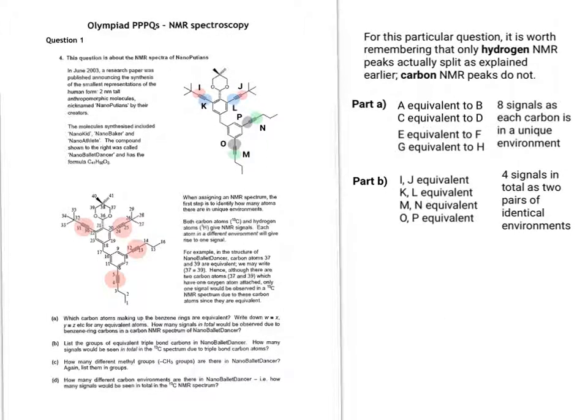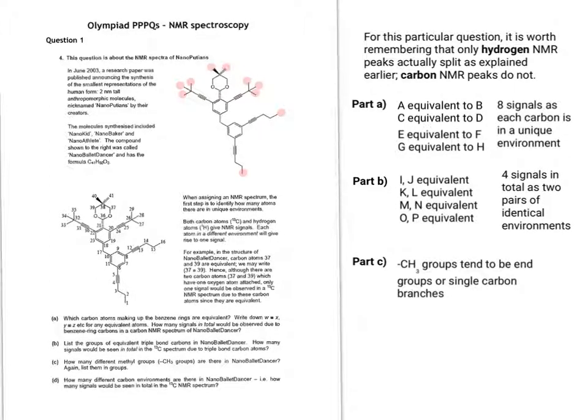For this part, they want us to work out how many CH3 groups there are. CH3 groups tend to be end groups or single carbon branches. I've identified in red all of the CH3 groups. Now we need to think about which ones are equivalent to each other. If you take the toes to be one environment, the fingers of the hands to be another, and each of the CH3s that point out of the head—one pointing towards us in green, one pointing away from us in grey—that means there's four different methyl group environments in total.